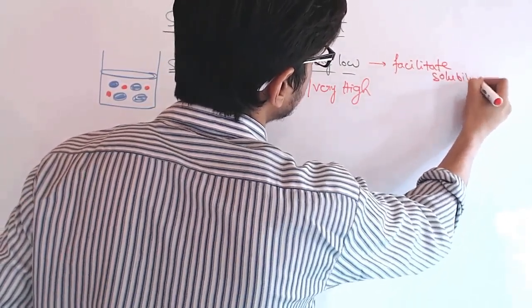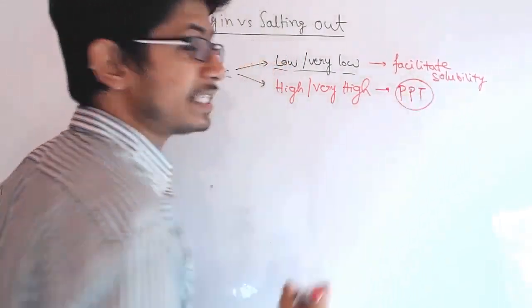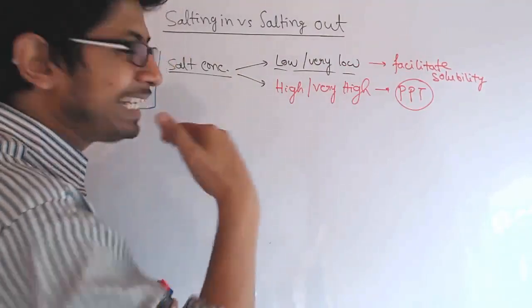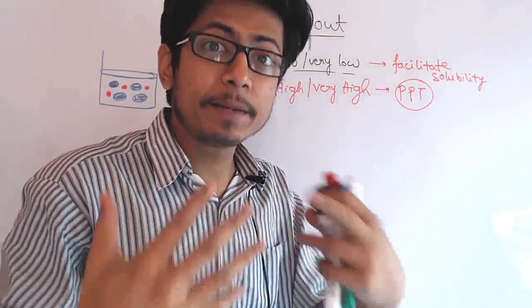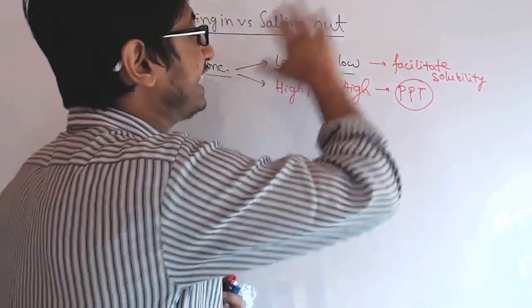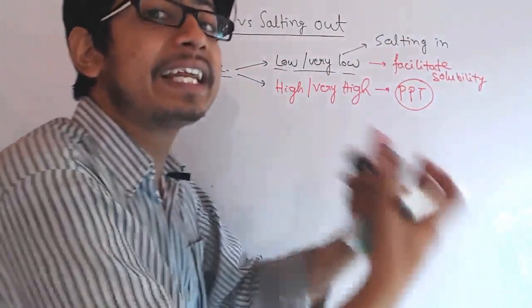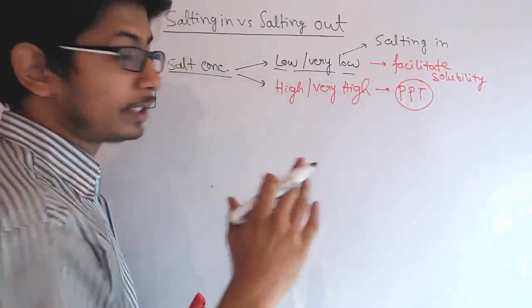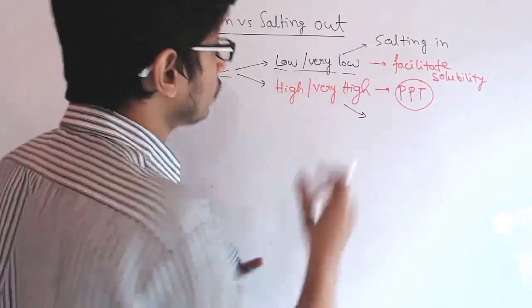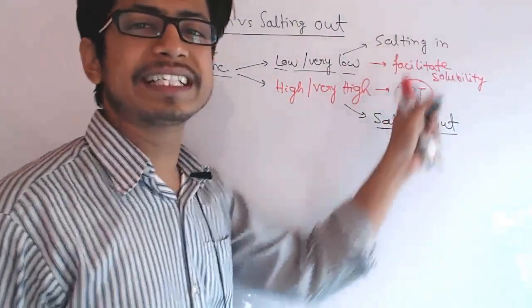At very high concentration of salt, protein molecules tend to fuse with each other and separate out from the rest of the aqueous solution. So at very low concentration it facilitates the solubility, while if we increase the concentration it causes the protein to precipitate down to the bottom. This phenomenon is known as salting in and salting out. Salting in means a small amount of salt helps proteins stabilize their structure, keeping them more soluble. Salting out is when increased salt destabilizes the protein structure and causes precipitation.